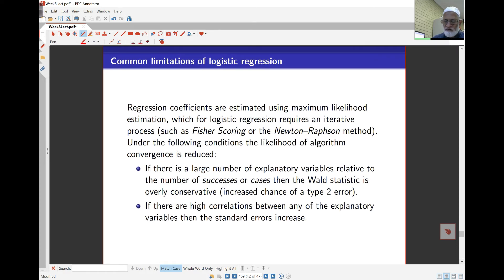Common limitations of logistic regression. The coefficients are estimated using maximum likelihood estimation. This requires iteration because the equations are very non-linear. There are many methods of solving the equations here, such as Fisher scoring or Newton-Raphson or gradient methods. The problem is that the algorithm doesn't converge to a solution many times because of the very complex likelihood function. So if you have a large number of explanatory variables, you will find that the models don't converge and that in particular the Wald statistic is very conservative. And so the type 2 error has a higher chance or increased chance.